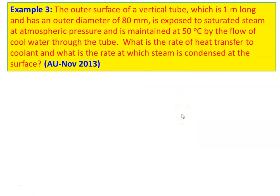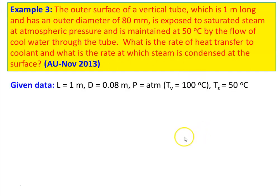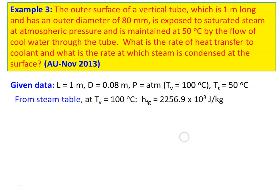Example number 3: The outer surface of a vertical tube, 1 meter long with an outer diameter of 80 mm, is exposed to saturated steam at atmospheric pressure and is maintained at 50°C by flow of cool water through the tube. Find the rate of heat transfer to the coolant and the rate at which steam condenses at the surface. Given data: length L = 1 m, diameter D = 0.08 m, steam at atmospheric pressure so vapor temperature Tv = 100°C, surface temperature Ts = 50°C. From the steam table, HFG = 2256.9 × 10³ J/kg.